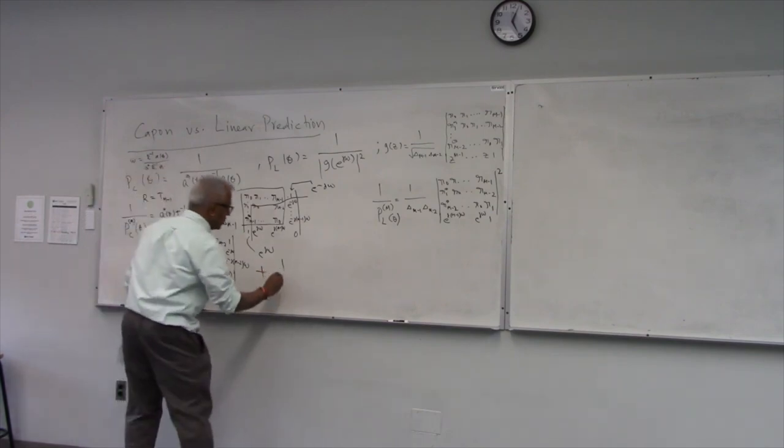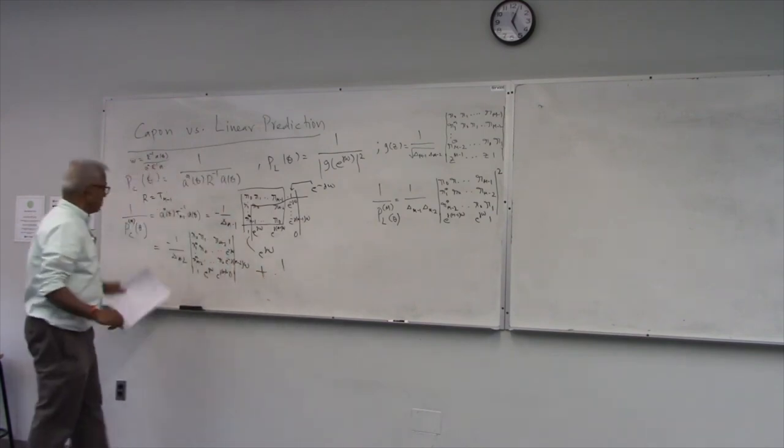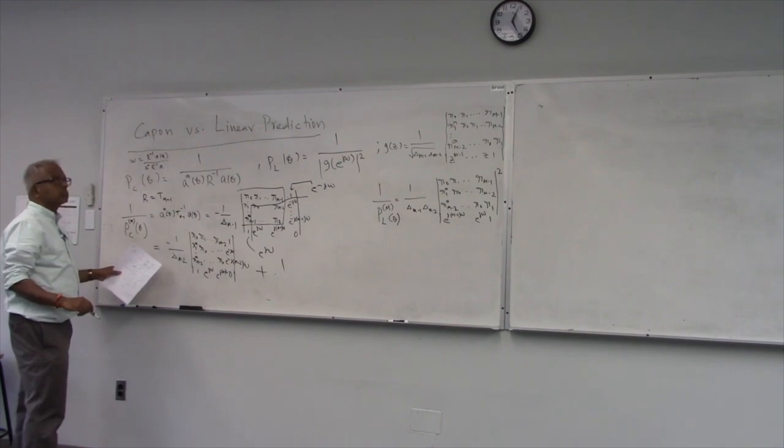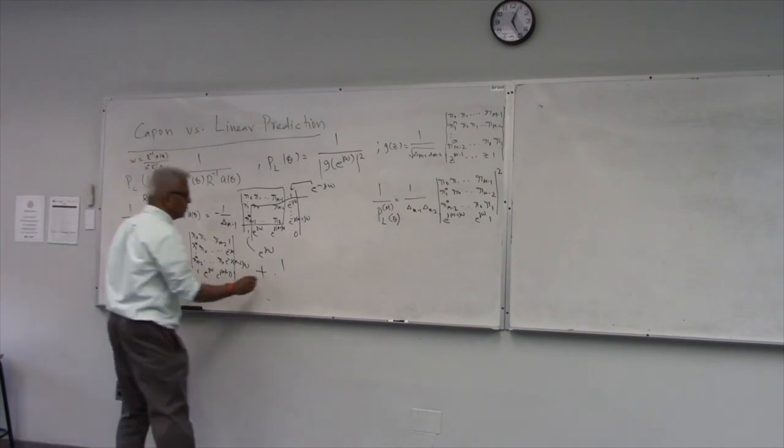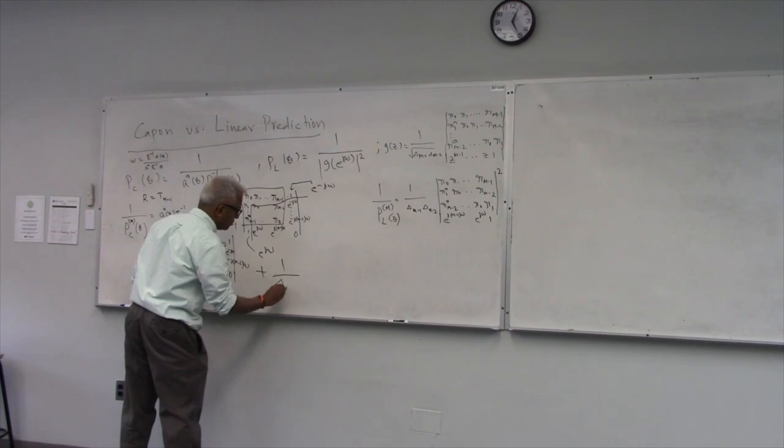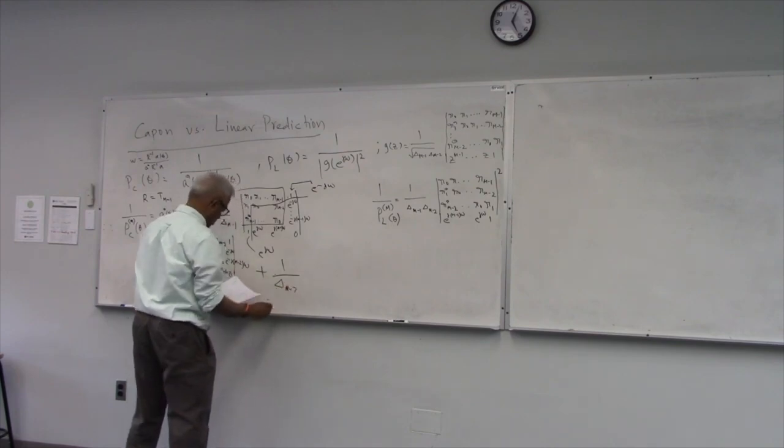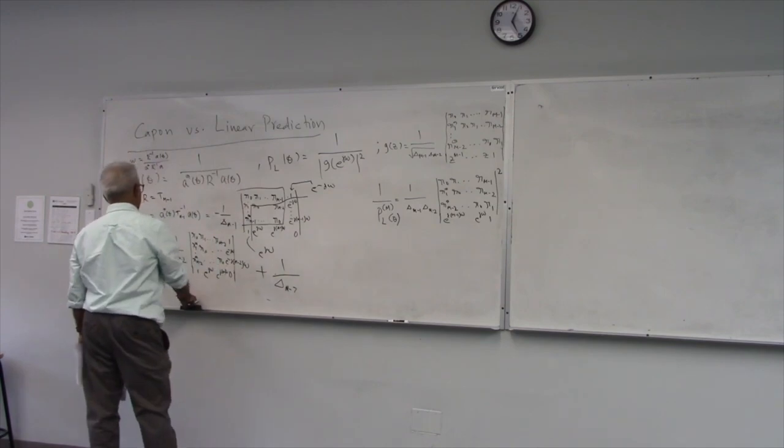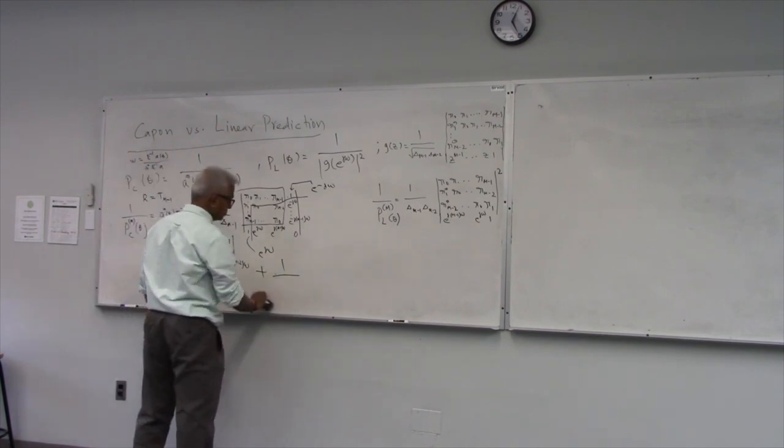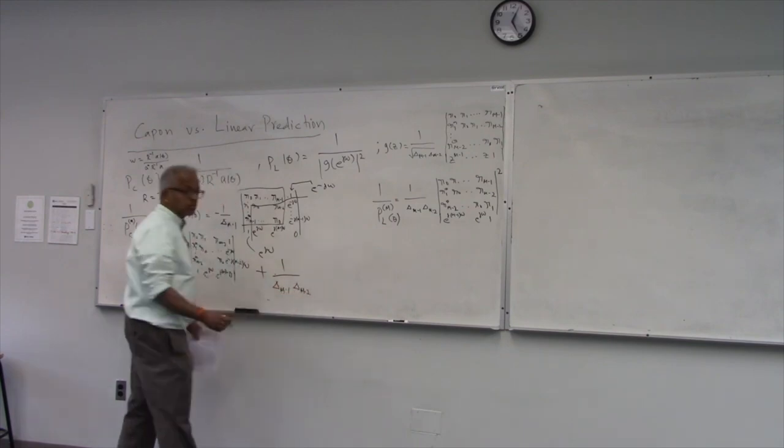And the last row is going to be, this is Rm minus one, so this will start with Rm minus two star, etc., up to R0. There was m minus one there, then there will be an m minus two, right?